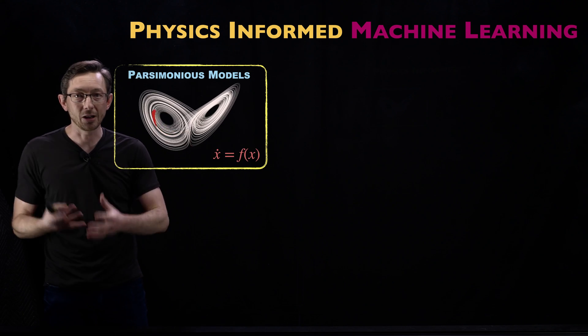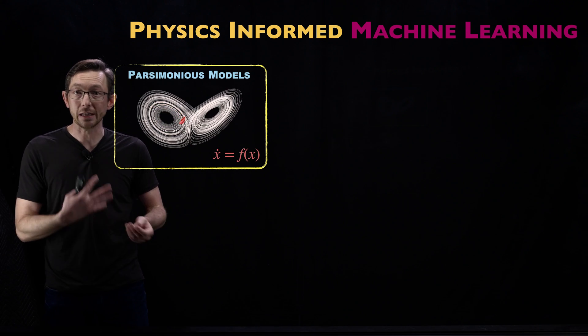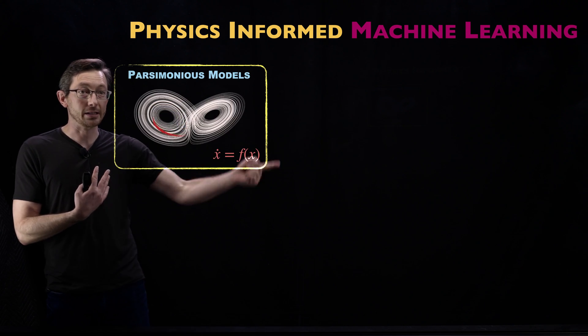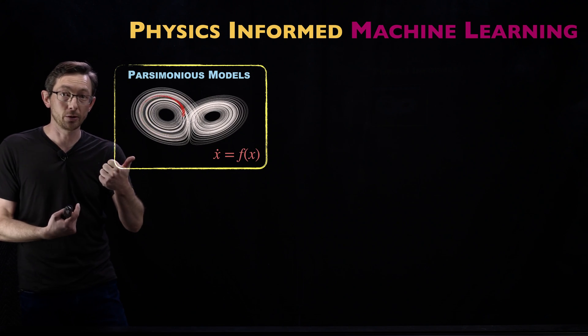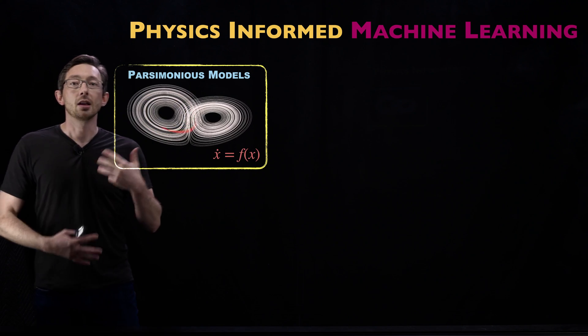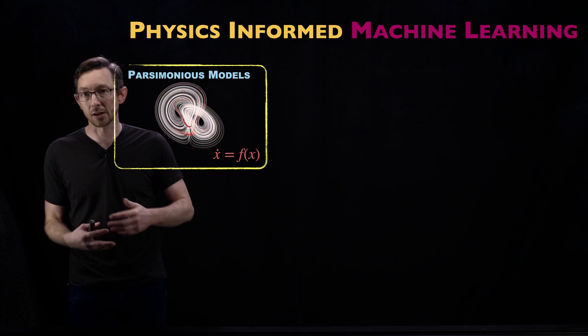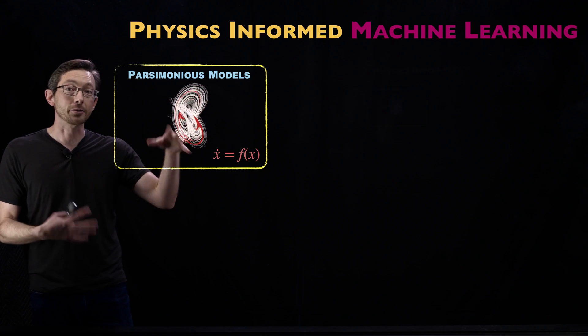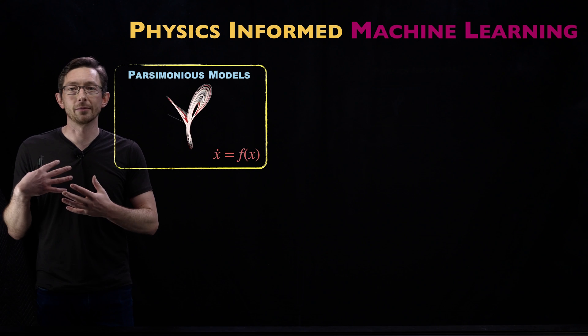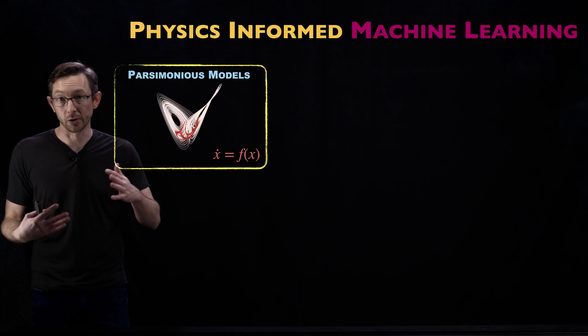The first module in this physics-informed machine learning course would be on parsimonious models. How do you take data and with machine learning discover differential equations that are interpretable and generalizable using the techniques we're talking about: different architectures, loss functions, optimization algorithms. How do you make these models more physical?